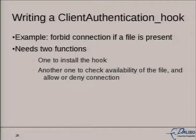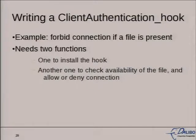This example will show you how to write a client authentication hook. What we will do is forbid — deny — a connection if a specific file is present on the filesystem. We will need two functions: one to install the hook, which is the _pg_init function where we set the client_authentication_hook global function pointer, and a second one to check the presence of the file and allow or deny the connection.